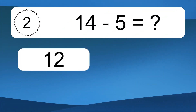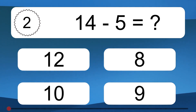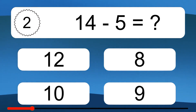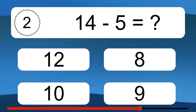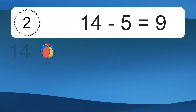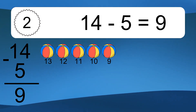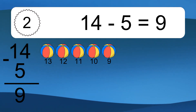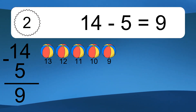14 minus 5 equals what? 14 minus 5 equals 9. Let's count it: 13, 12, 11, 10, 9.